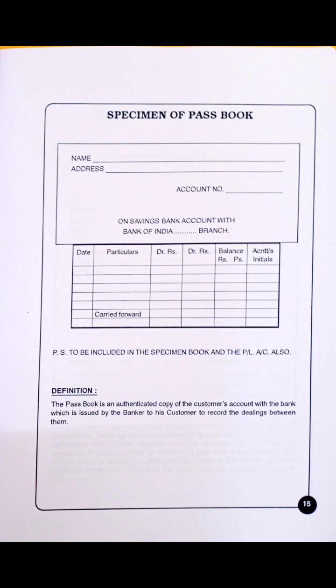Passbook specimens have also appeared in exams — it is very simple. First write the name, then address, then account number with 'saving bank account with Bank of India' and the branch. The format columns are: date, particulars, amount, amount, and balance — same as you know from 11th standard practice. 'Carried forward' is written on the left-hand side when the amount overflows. Definition: the passbook is an authentic copy of the customer's account with the bank, used by the banker to record dealings between them.